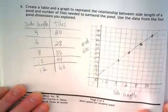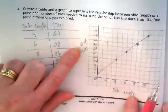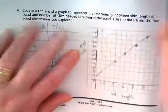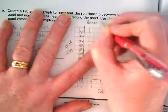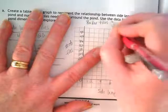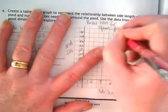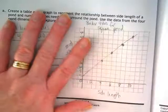There's one thing that's missing from my graph. We've got labels. What we're missing is a title. Border tiles for square pond could be something we'd label it.